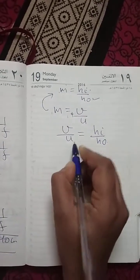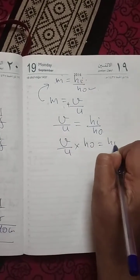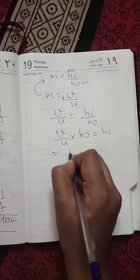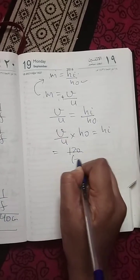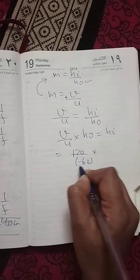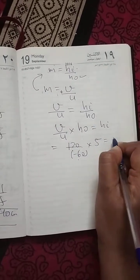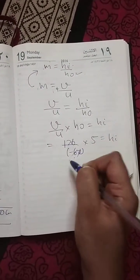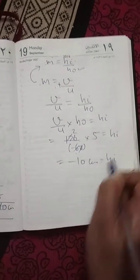Height of image upon height of object, then V upon U into height of object equals height of image. What is the value of V? It is plus 120. What is U? U is minus 60. Take out the minus sign, always use minus sign. Height of object is plus 5. I am not doing by myself, it is given height of object is plus 5. 60, 60, 20, and minus sign, that is minus 10 centimeter is height of image.